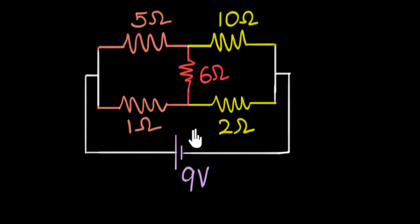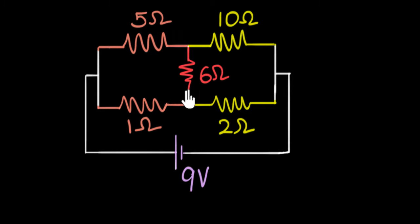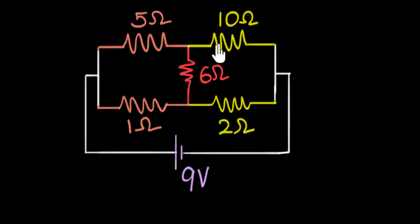What if I asked you to calculate the current through this circuit? How would you do that? Well, the first thing I always like to think about is: can I reduce this circuit into a single resistance by using the series and parallel formula? I don't see any resistors in series, and there is a resistance in between. I don't see any of them in parallel either — they are not directly connected across each other. So I can't reduce this using series and parallel.